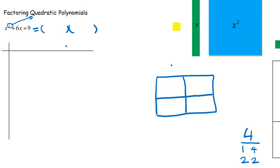Of course, if you want to check your answer, all you have to do is multiply this binomial times this binomial to make sure you got the right problem — just like multiplication and division. I know twelve times two is four, and I can check that because four divided by two is two.